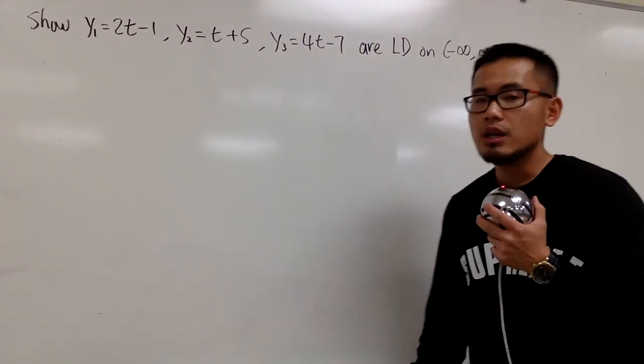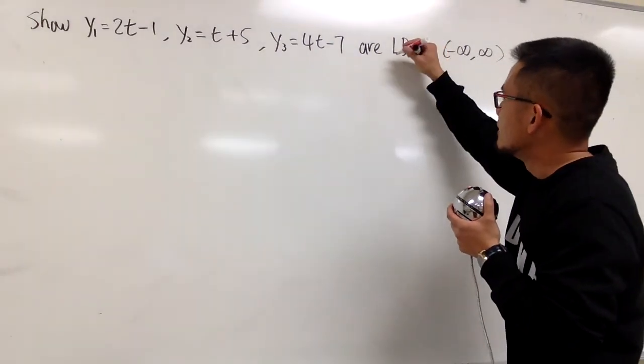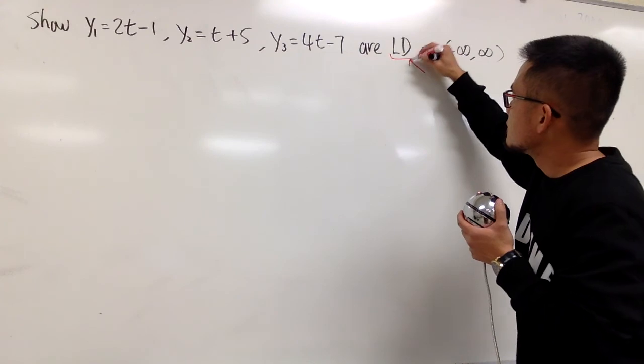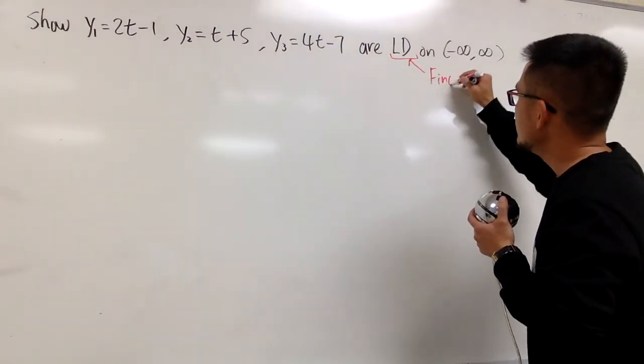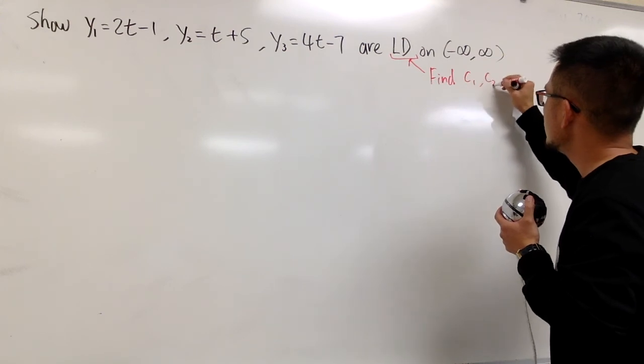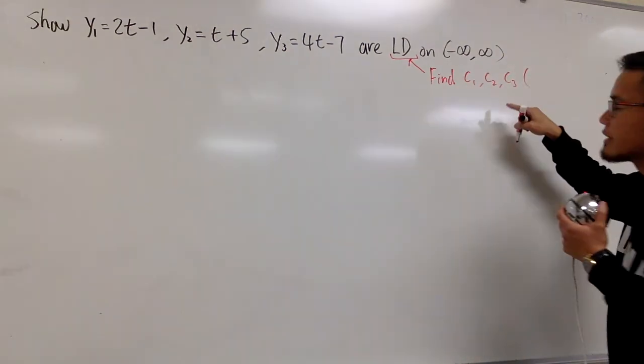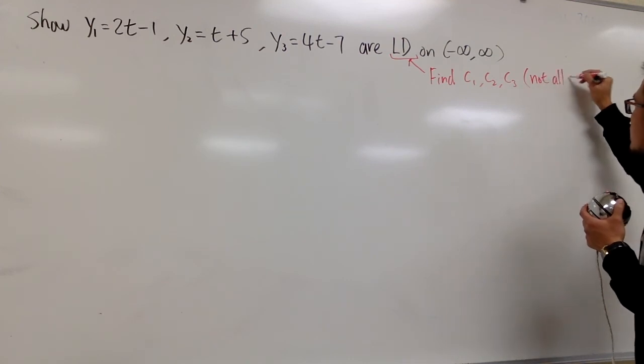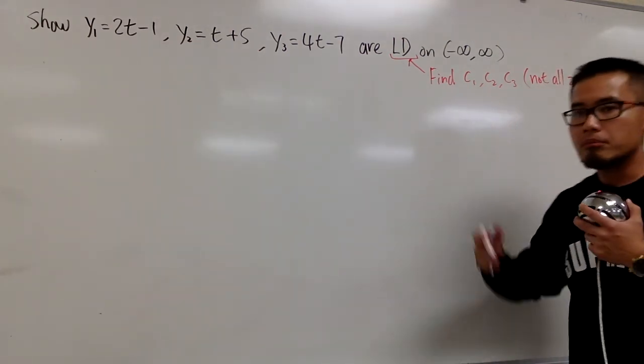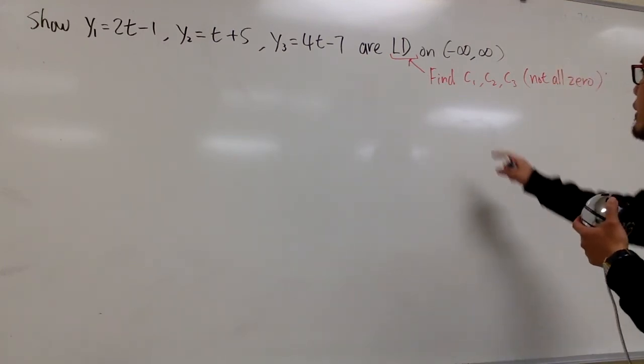And this is how we are going to do it. For linearly dependent, what we are going to do is we have to find three constants c1, c2, and c3. And the condition on these constants is that they are not all zero. Sometimes one of them could be zero.